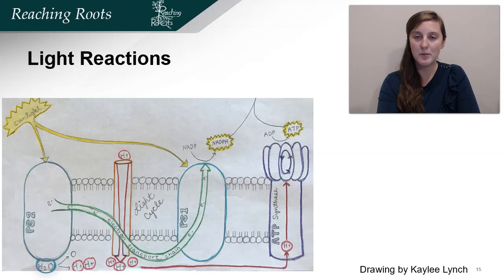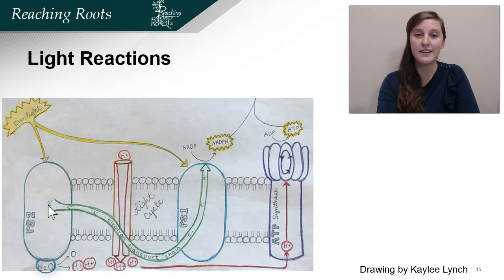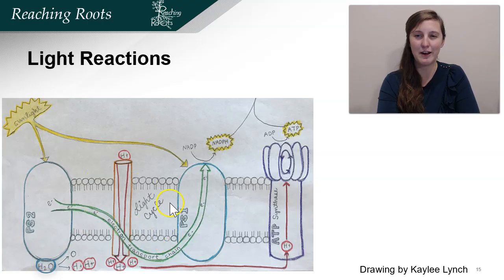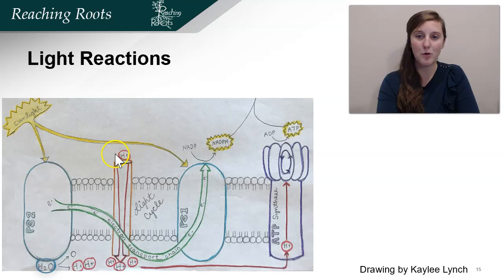We're going to go through this process a couple times, so don't get overwhelmed and don't draw it right away. Step one in this process is light absorption. Sunlight hits photosystem 2, and in that process it excites or activates electrons. They go through a series of electron carriers, which is referred to as the electron transport chain. In that process, they release some energy, which does a useful thing: it takes hydrogen from the stroma — the outside of the thylakoid membrane — and brings those hydrogens to the interior. This is really important for a later step.